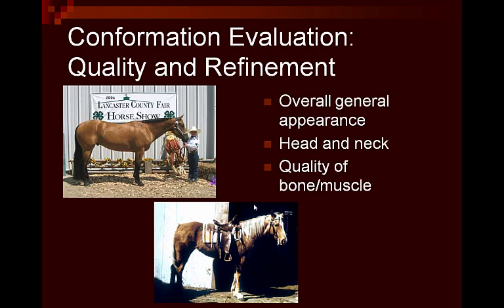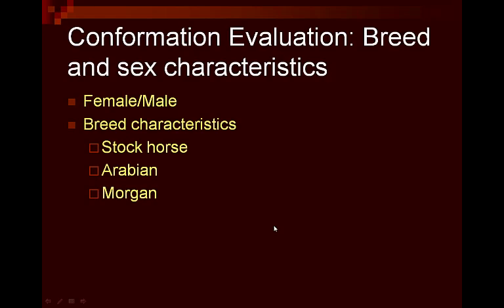So we've talked about balance, muscling, and structure. The other one we need to address is overall quality and refinement, which really is just looking at their overall general appearance. We look at their head and neck, the quality of their hair coat, and the quality of their bone and muscle. It's easy to see that even though one horse here is kind of light-muscled, he by far is a higher-quality type of horse than the other. You won't often have as drastic a difference between two horses, but it's obvious to see the distinction — even if there are some conformational things that aren't perfect, overall quality and refinement can still be high.